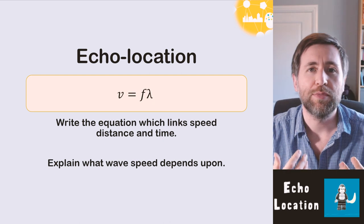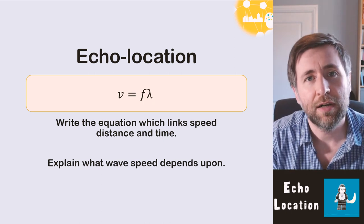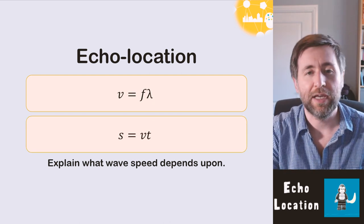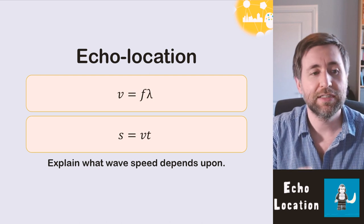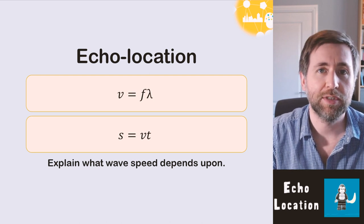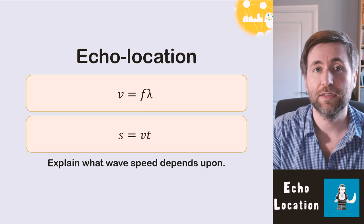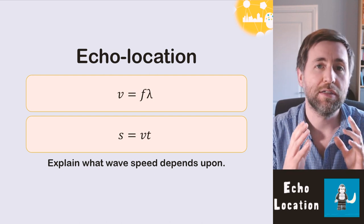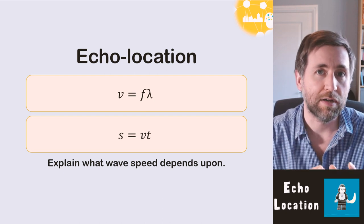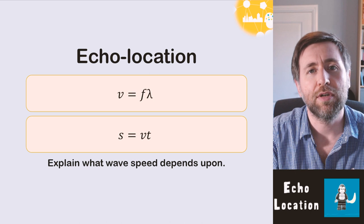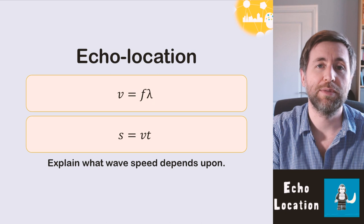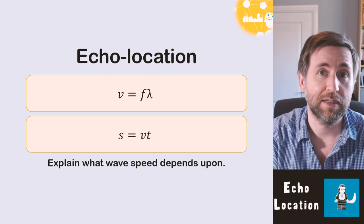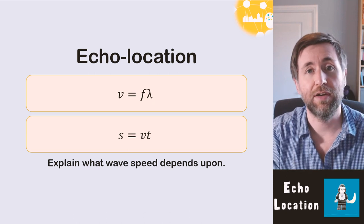You also need to know the equation linking distance, speed and time: distance s equals speed v times time t. We're going to use that to work out a distance. There is one important idea to make sure you don't mess up: the wave has actually traveled twice the distance to the object because it's traveled there and back.